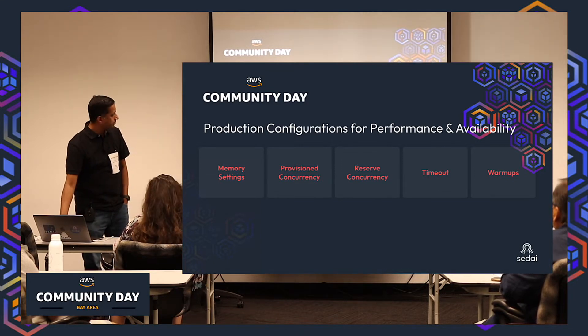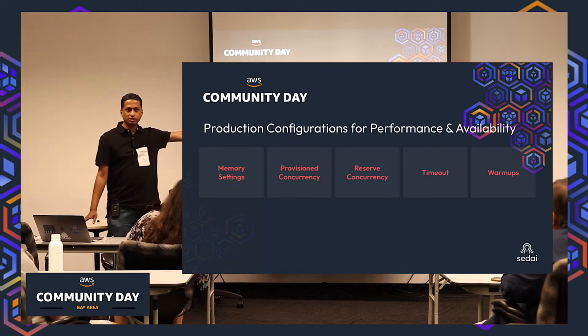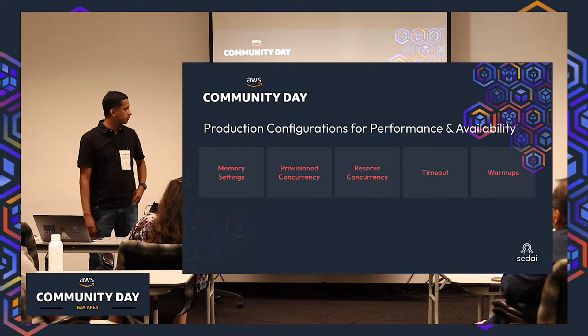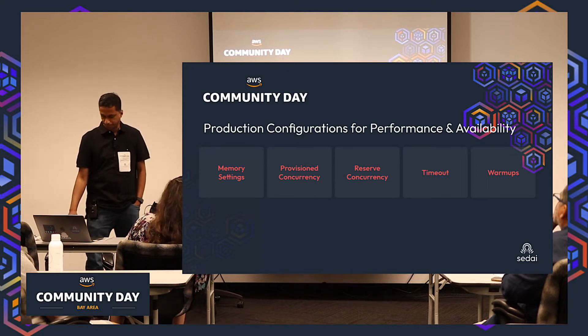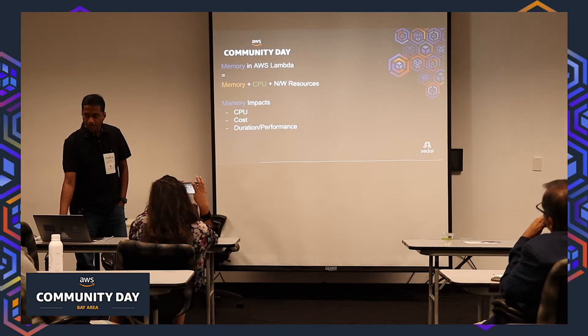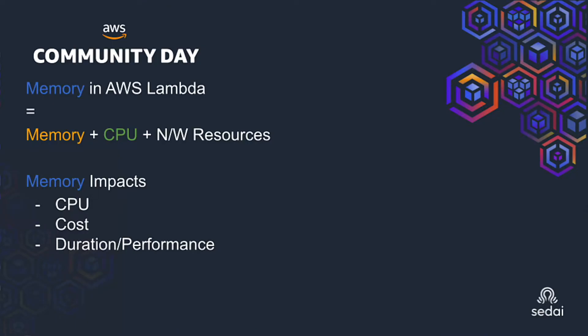Memory settings are one of the key configuration items for Lambdas in production. Memory in serverless is a loaded configuration — it technically includes memory, CPU, and network resources. So when you increase memory from 128 MB to 10 GB, CPU is also increasing. Amazon's minimum is 128 MB and you can go all the way to 10 GB.